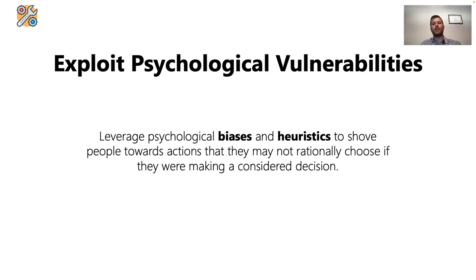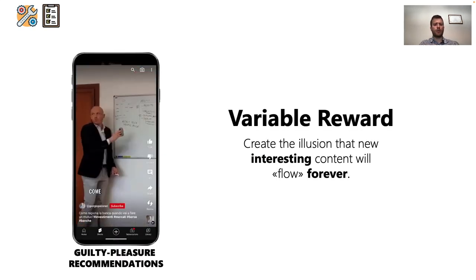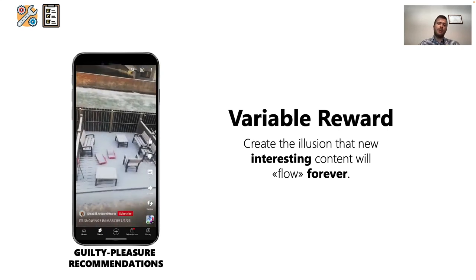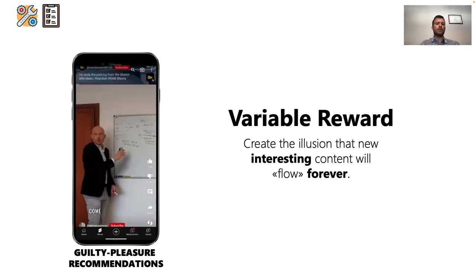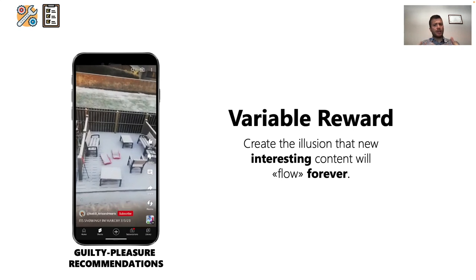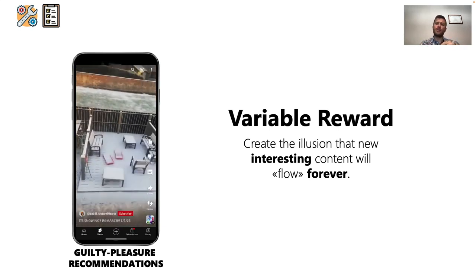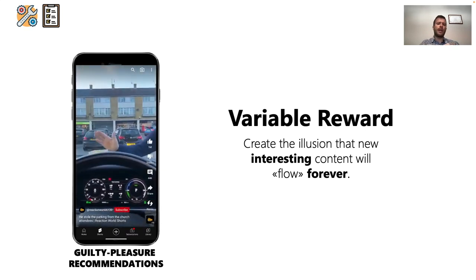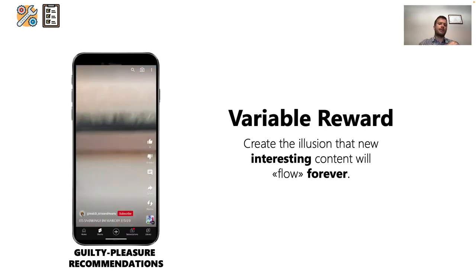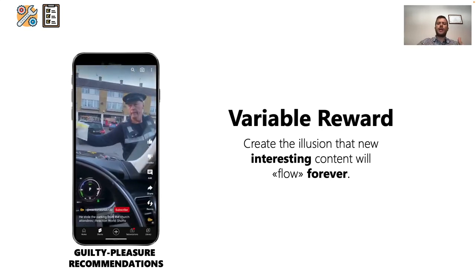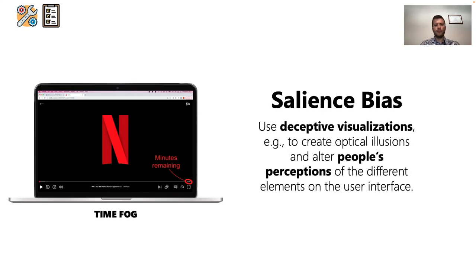Another strategy common to dark patterns generally is the exploitation of cognitive biases and heuristics to manipulate users into actions they would not rationally choose. We identified two main techniques targeting user psychology. The first is the variable reward technique: many patterns create the illusion that there is always new exciting content to be consumed. For example, the guilty pleasure recommendations pattern — YouTube Shorts continuously suggests new videos to watch, but the quality of the next recommendation cannot be precisely predicted, trapping us in a loop hoping the next video will be more exciting than the previous one.